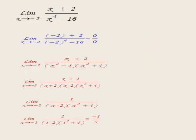Another example: limit as x approaches negative 2 of (x plus 2) over (x⁴ minus 16). By substitution: 0 over 0. Factorize the numerator: (x plus 2). Factorize the denominator: x⁴ minus 16 equals (x² minus 4)(x² plus 4) equals (x minus 2)(x plus 2)(x² plus 4). Cancel (x plus 2) with (x plus 2). The remainder is 1 over (x minus 2)(x² plus 4). Substituting x equals negative 2: 1 over (negative 2 minus 2)(4 plus 4) equals 1 over (negative 4)(8) equals 1 over negative 32.